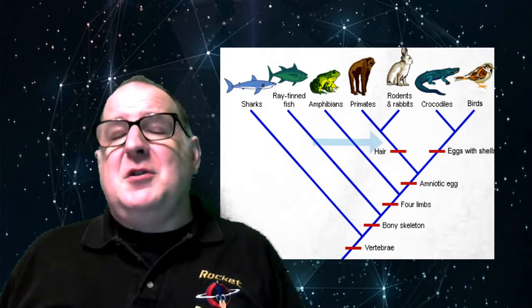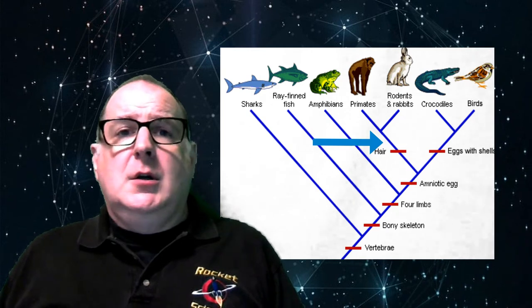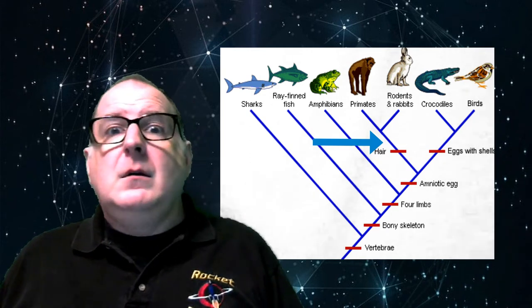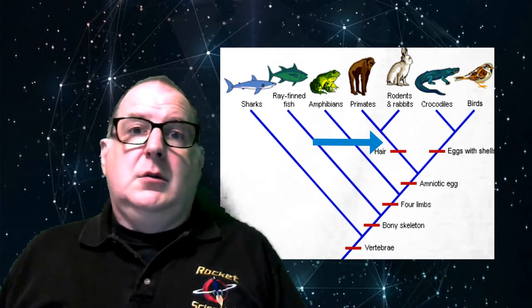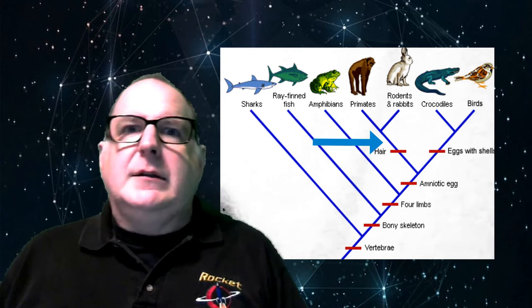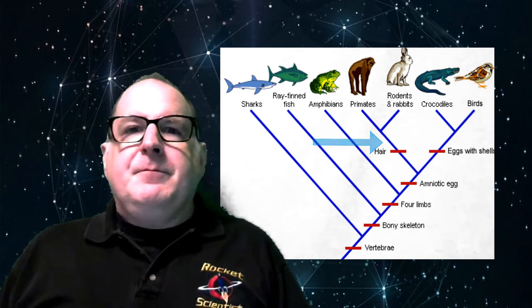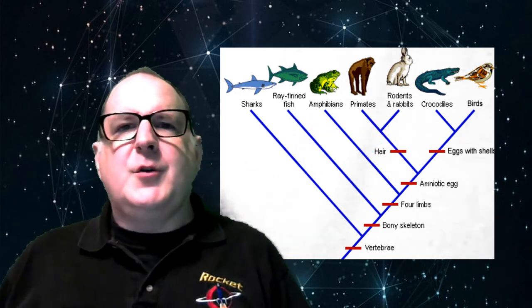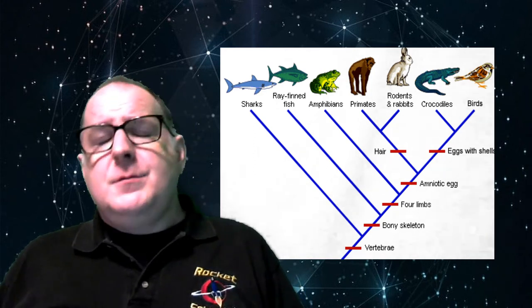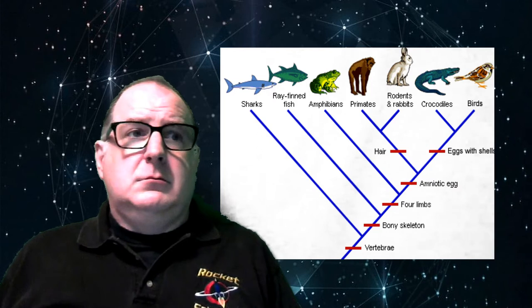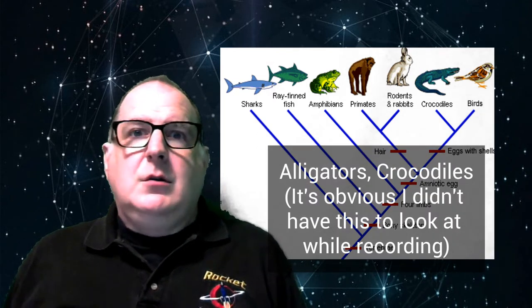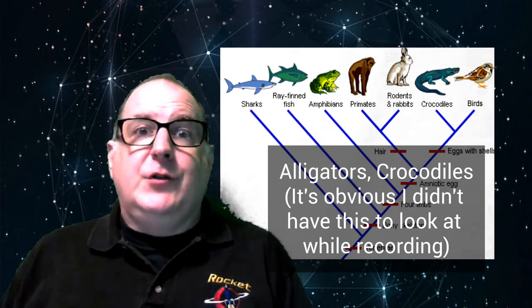Moving up, there's a branch for mammals. Humans and primates are on there, and so are rabbits and other animals like dogs and cats. There's another branch for eggs that have shells - birds and alligators that lay eggs with shells.